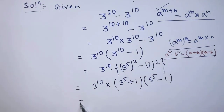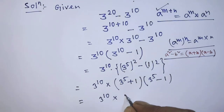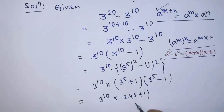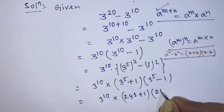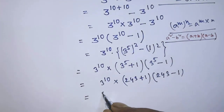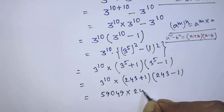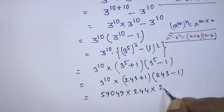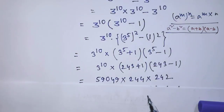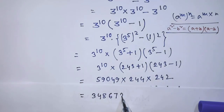After that, it will be 3 to the power 10 times — 3 to the power 5 is 243 — so 243 plus 1 times 243 minus 1, which is 244 times 242. So it will be 59049 times 244 times 242. If you multiply these three numbers, you get 348 crore, 67,25,352.